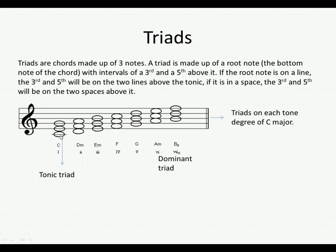Here we've got our root note which is a C on a line, and then the next two notes of the chord on the E and the G on the lines above it. Here our root note is a D and we've got our F and an A in the spaces above it.